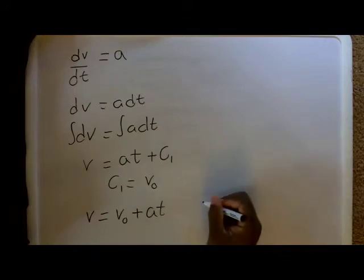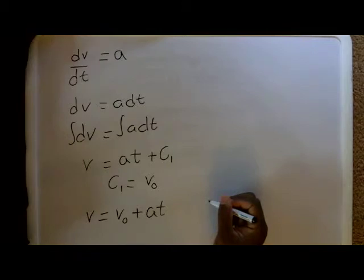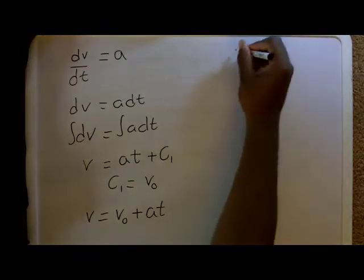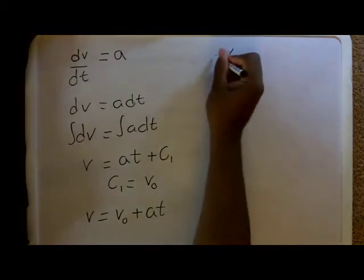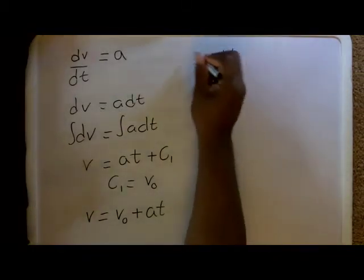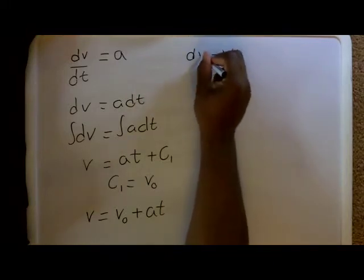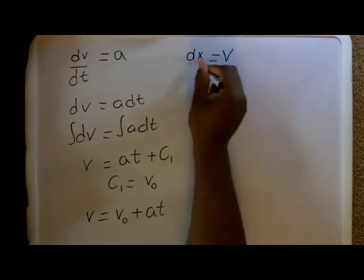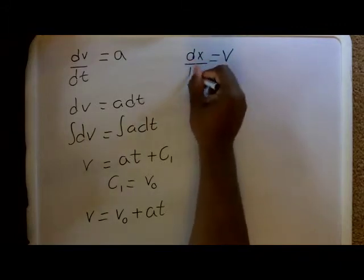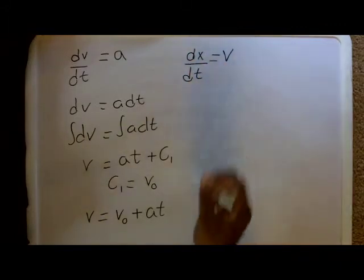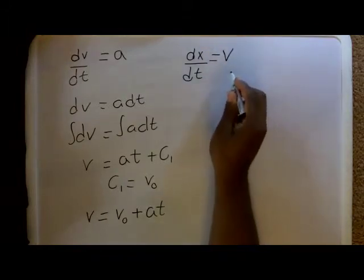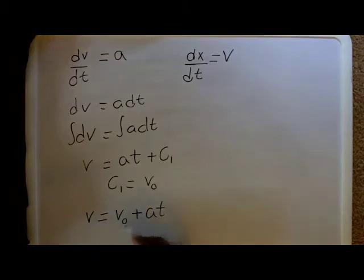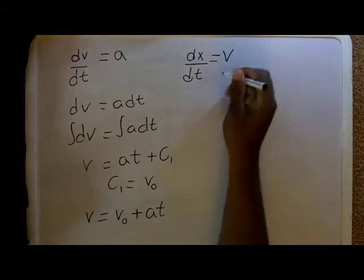For the displacement or the position, we know that velocity, v, is basically just the slope of the position over time. So, it's the derivative of position. We'll use x as position: dx/dt. We know from here that v, the velocity, equals this.